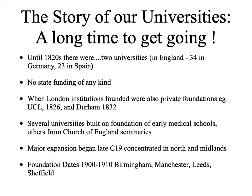Some of the universities that succeeded Oxford and Cambridge were built on the foundation of early medical schools, which was one of the first areas where higher education increased. Others grew out of Church of England seminaries — training for the priesthood — gradually expanding into higher education for different areas. Some of the major expansions in the late 19th century were concentrated in the North and Midlands of England. Between 1900 and 1910, Birmingham, Manchester, Leeds, and Sheffield — new universities were created in those parts of the North and Midlands.